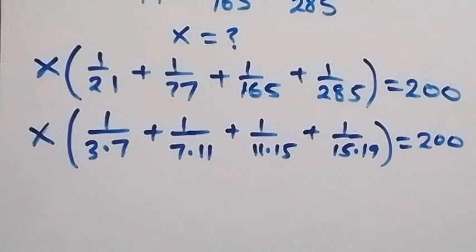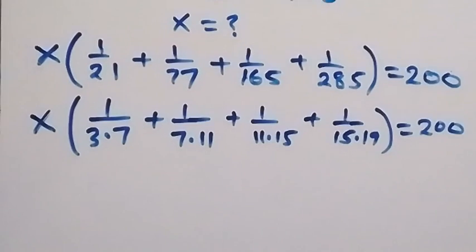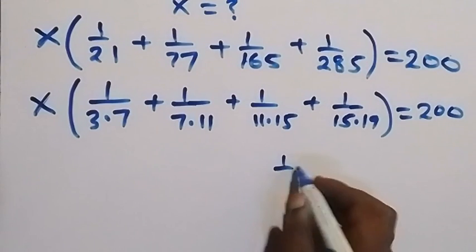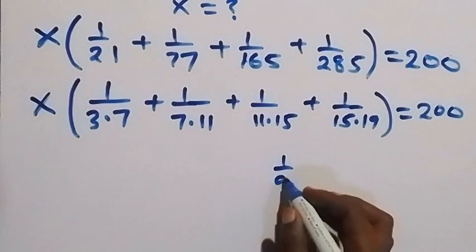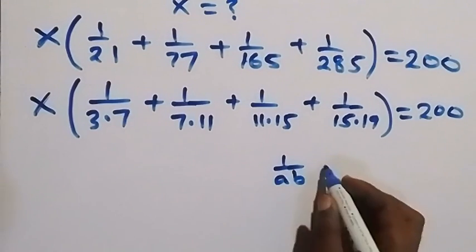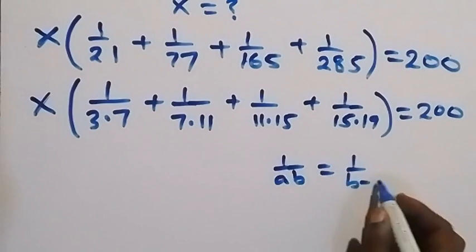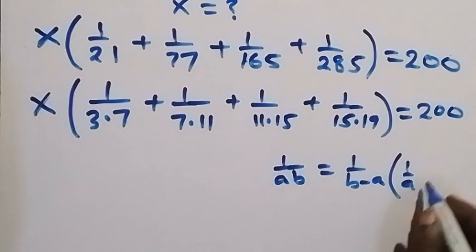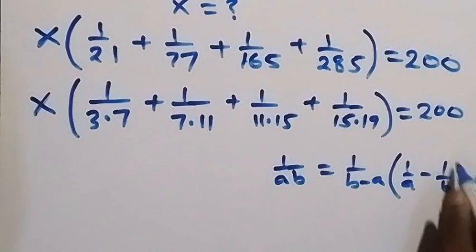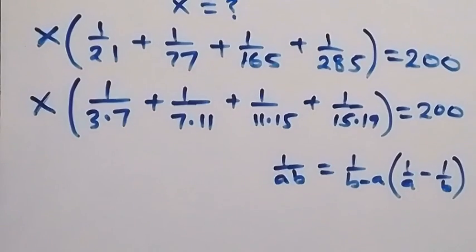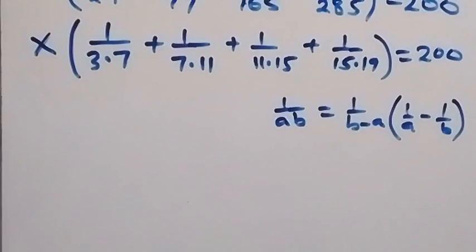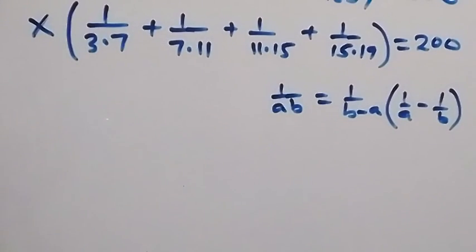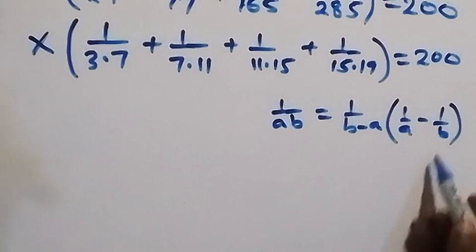And in the next step, we use the identity: when we have 1 over AB, we can write this as 1 over (B minus A) multiplied by (1 over A minus 1 over B). So instead of writing 1 over AB, we can equally write 1 over (B minus A) times (1 over A minus 1 over B).